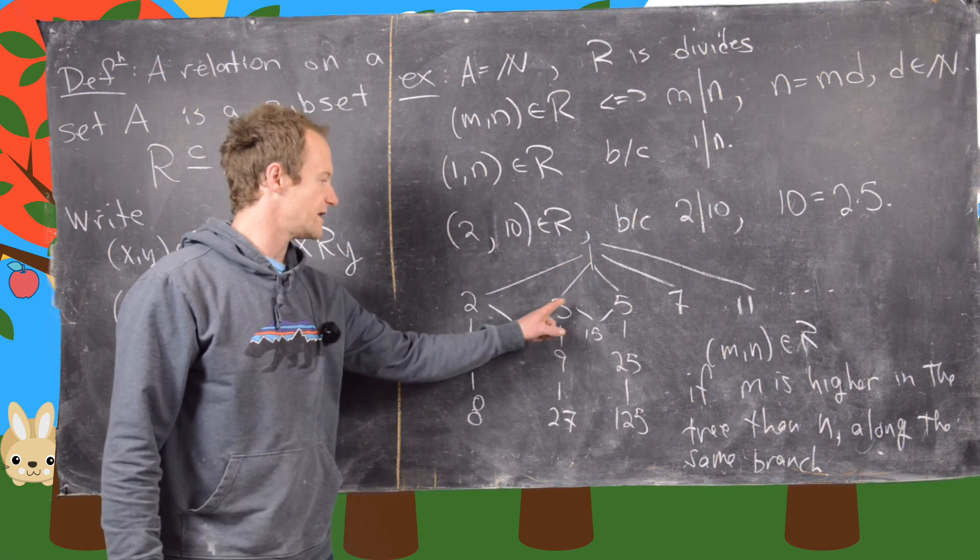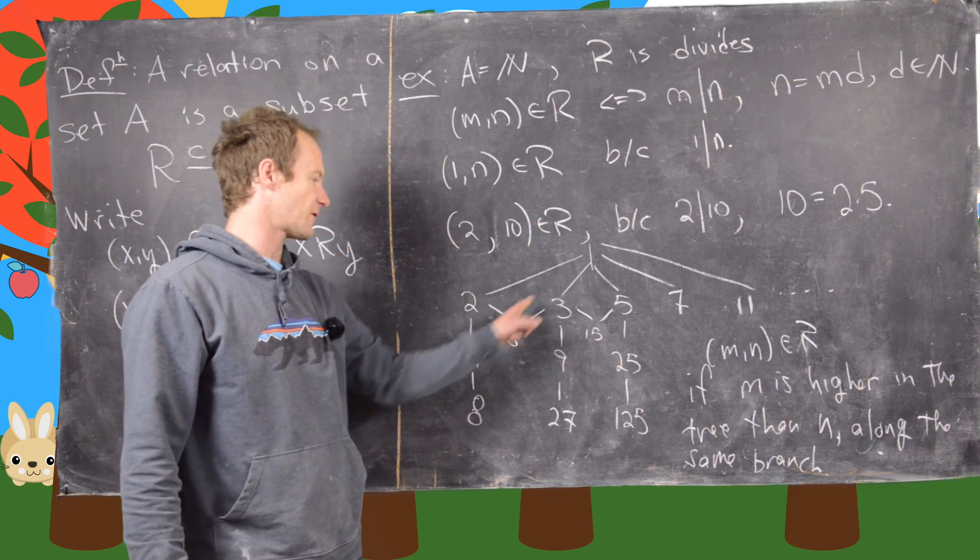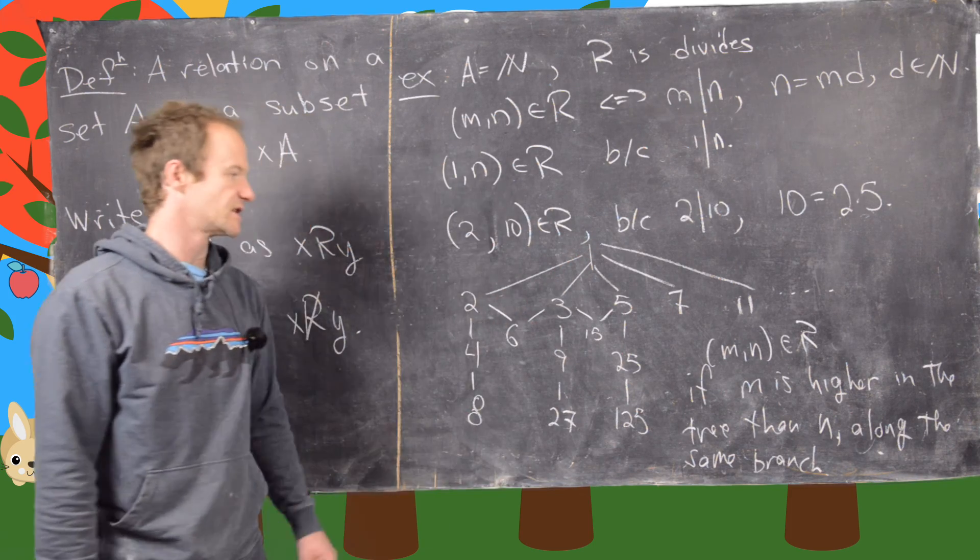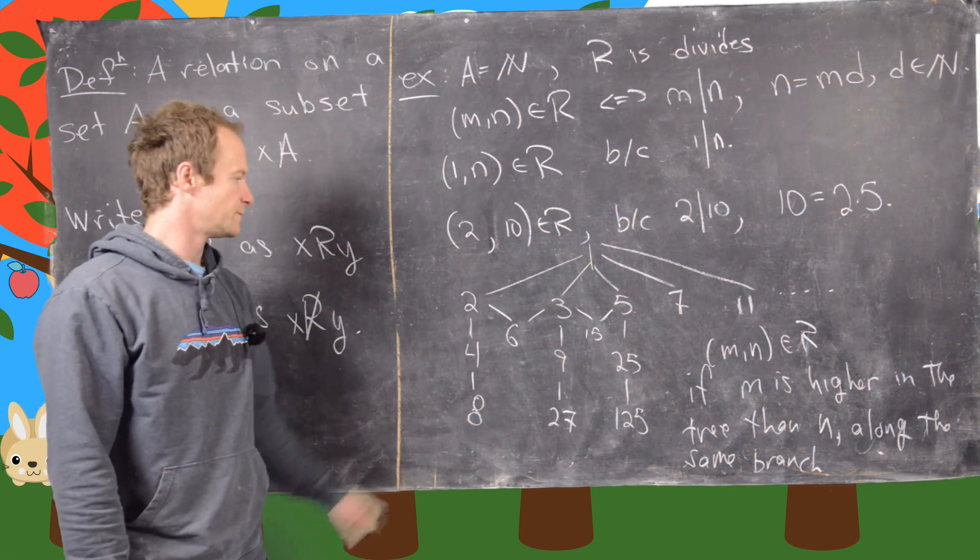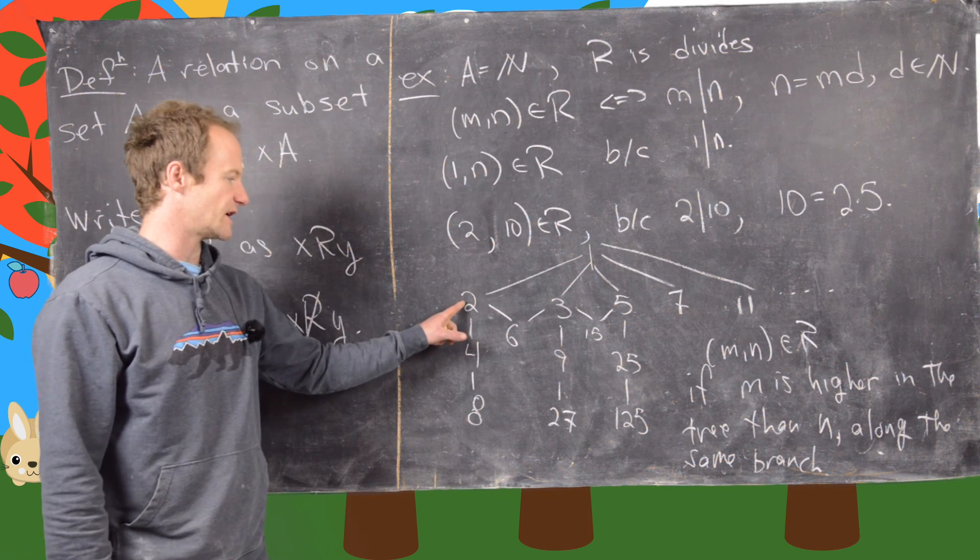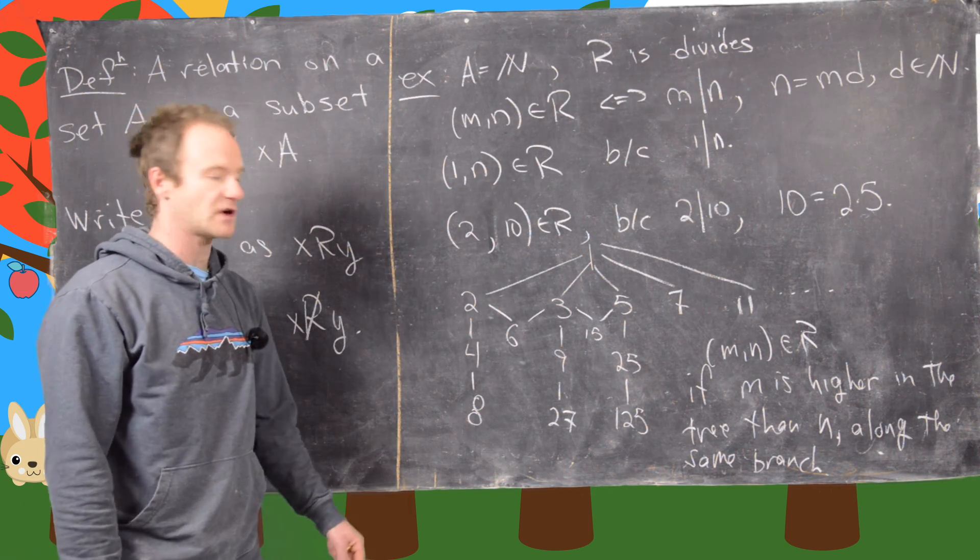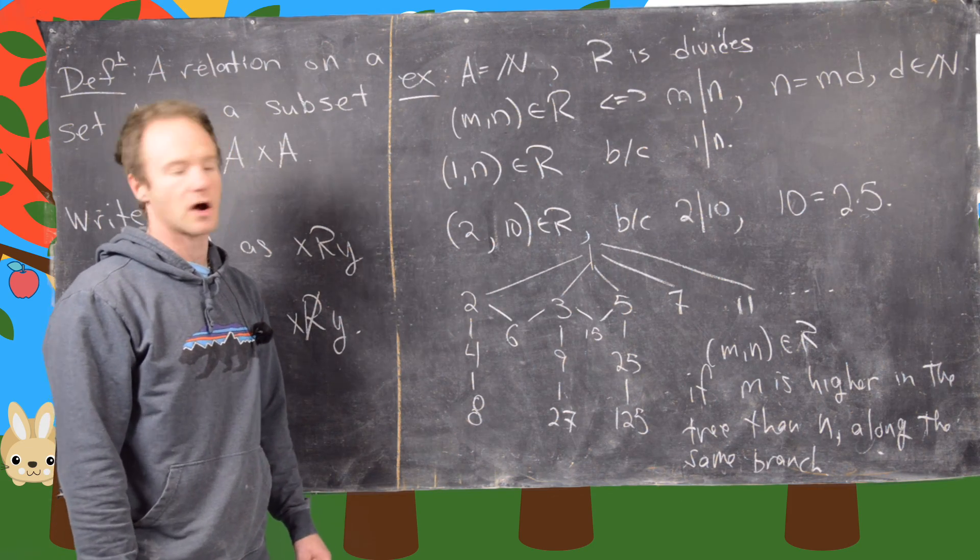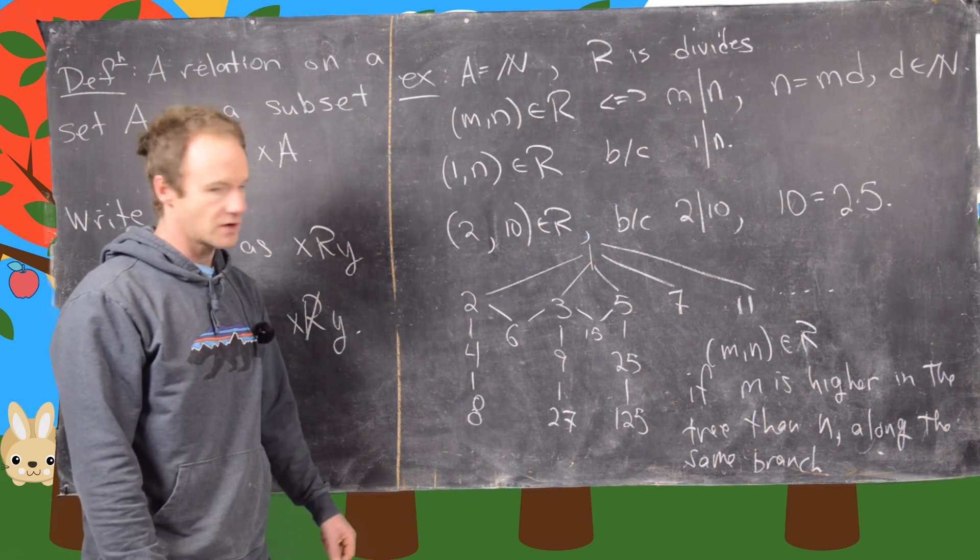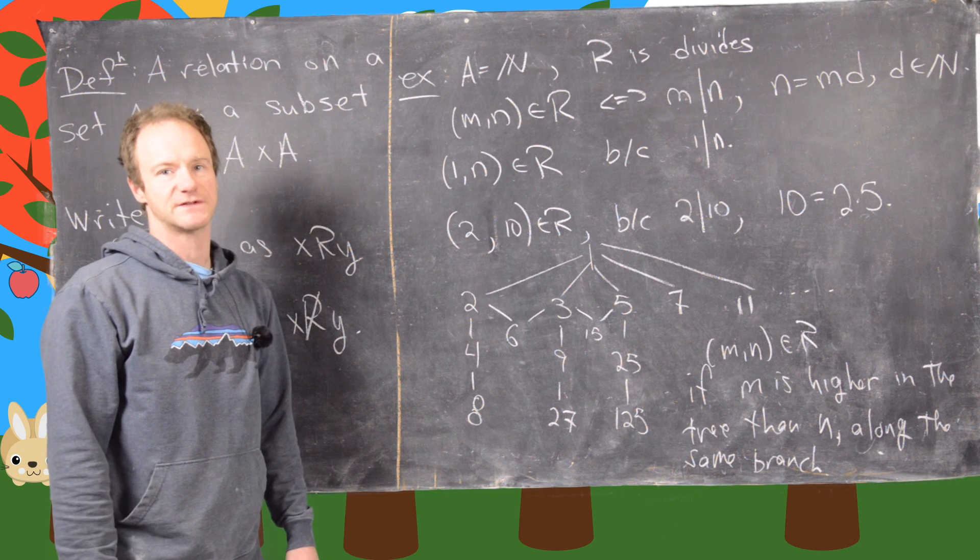So we know that 1 divides everything because we can get from 1 to everything else just by going down. 2 divides 6 because we can get from 2 to 6 by going down. So that means 2, 6 is in our set R and so on and so forth. So this is a good place to stop this video.